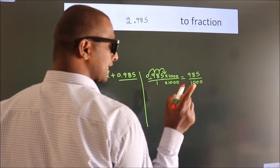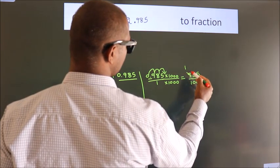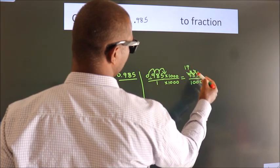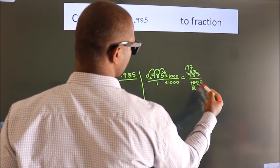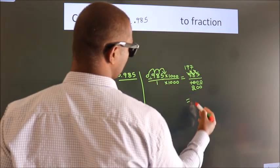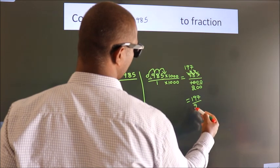Now I cancel with 5. 5 ones, 5 nines, 5 sevens, 5 twos. These zeros as it is down. So the fraction we got is 197 by 200.